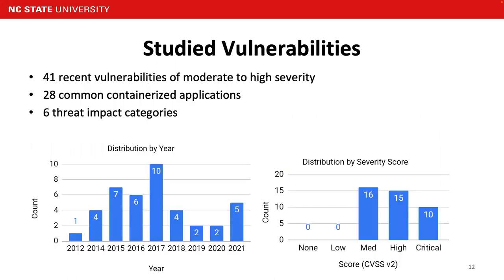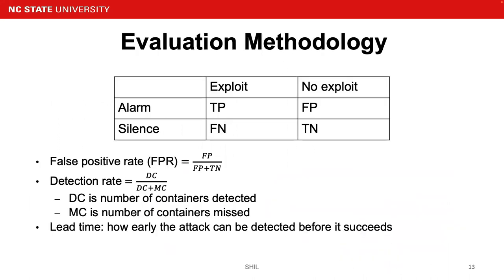Moving on to the experiment setup: we studied 41 recent vulnerabilities with severity scores from moderate to high. Those 41 vulnerabilities come from 28 containerized applications with six different threat impact categories — for example, executing arbitrary code. To evaluate the experiments, we introduce false positive rate, detection rate, and lead time.